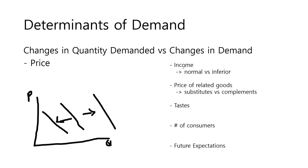The first determinant is income. There are two types of goods: normal goods and inferior goods. If our income increases, the demand of normal goods — which are most of the goods we use — will also increase. While the demand for inferior goods, such as canned food, instant noodles, and margarine, will decrease, since we now have more money to purchase better products than those inferior goods.